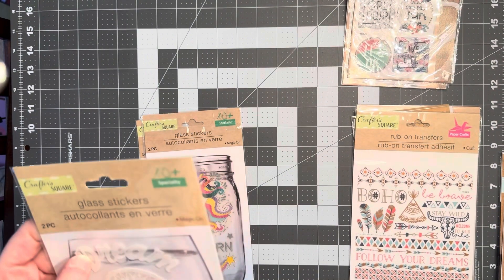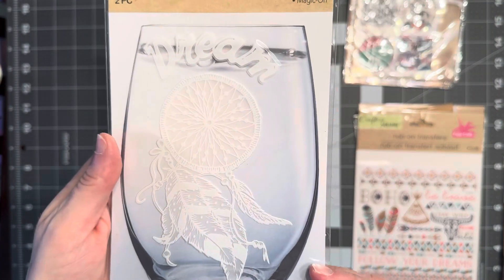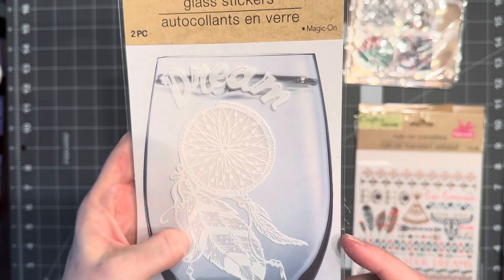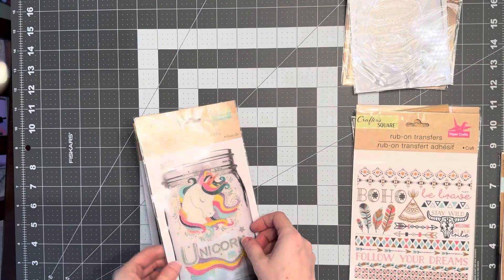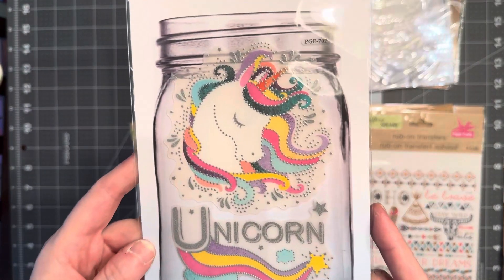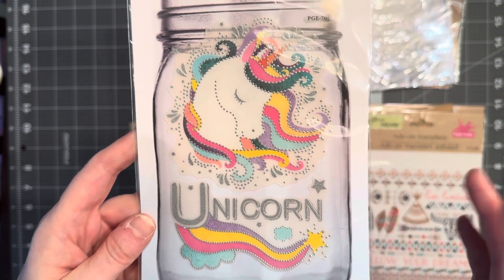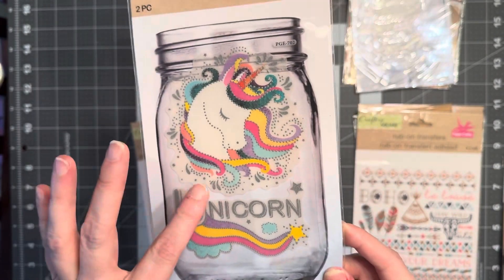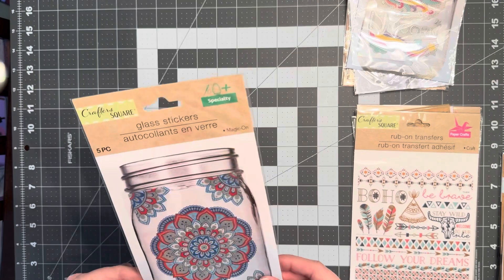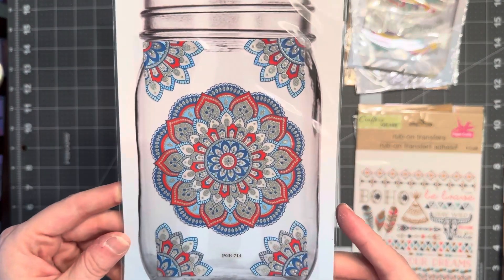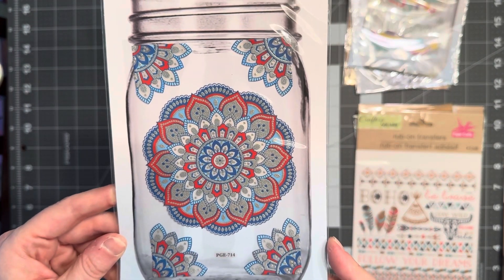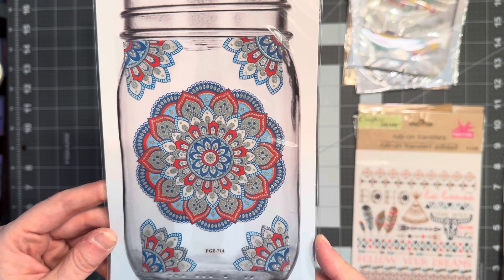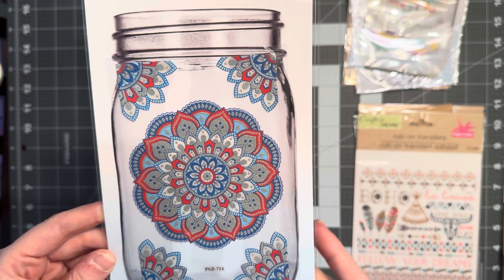I got some glass stickers, which this one says dream and it's a dream catcher and it's all white. I got this sticker that is a unicorn that also says unicorn. I thought this one was really cute and then this glass sticker which is like mandala. I thought this would be super cute too just to kind of see how they work.